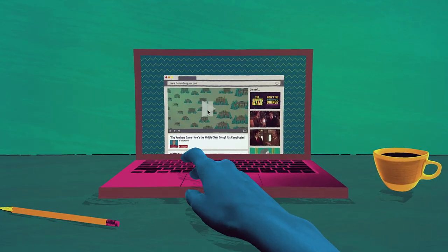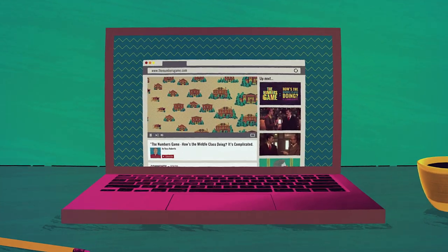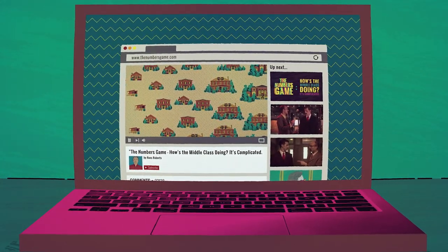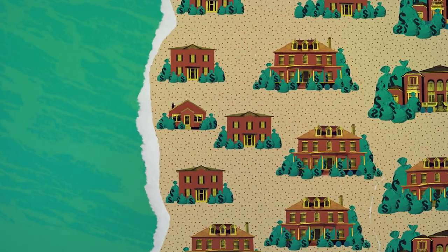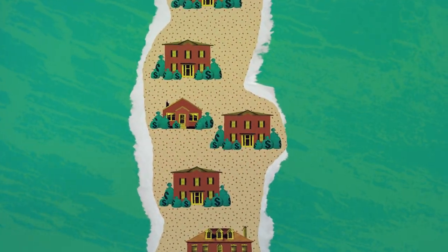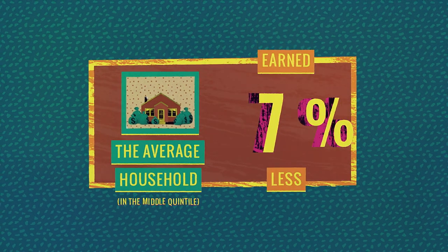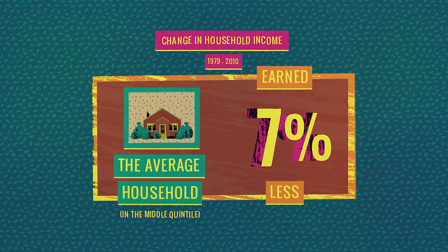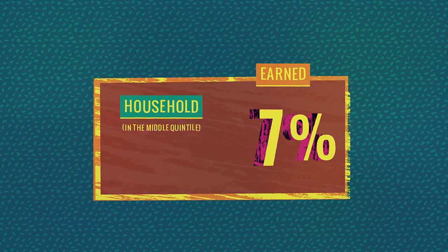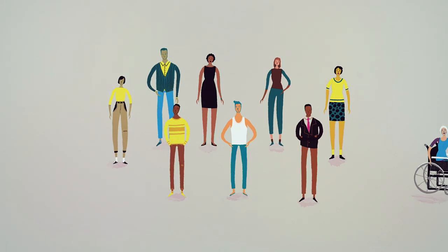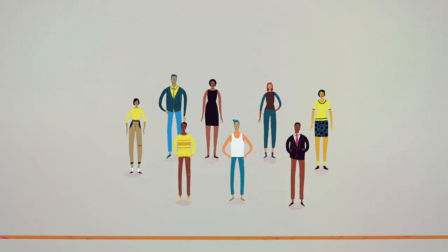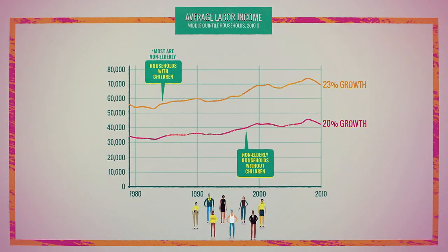Let's start with an example from the first episode in this series: the growth over time in household income for the middle quintile — households that earn more than the bottom 40% and less than the top 40%. The average household in the middle quintile earned 7% less in 2010 than in 1979 after correcting for inflation. But that measure includes the elderly. If you exclude elderly households, which you should if you're trying to see how the economy treats workers, the picture's a lot rosier.